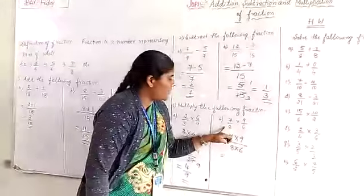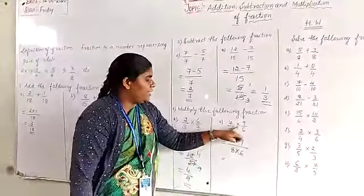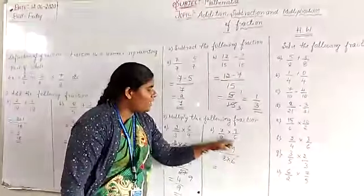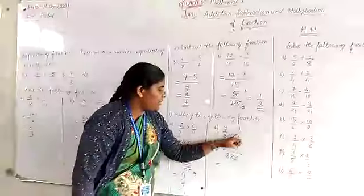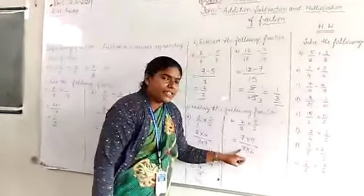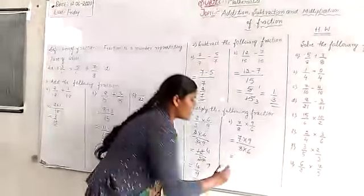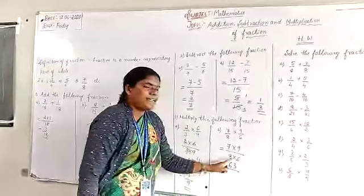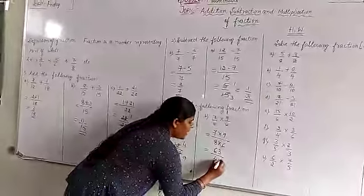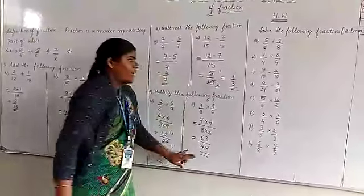Same method, another problem: 7 by 8 into 9 by 6. Here also you multiply. 7 into 9 divided by 8 into 6. 7 nines is how much? 63 divided by 8 sixes, how much? 48. This is the final answer.